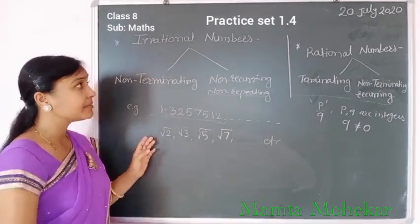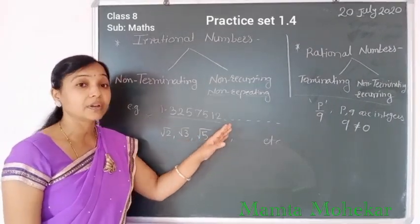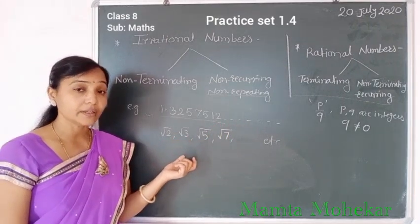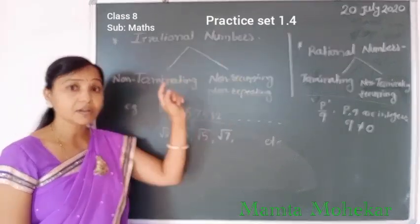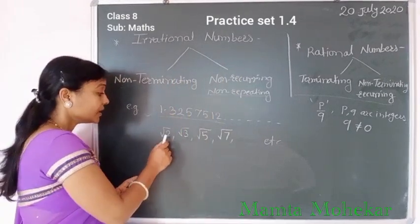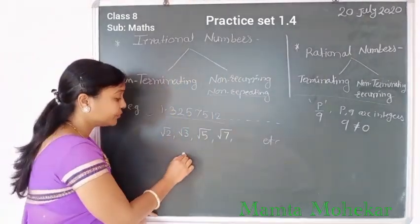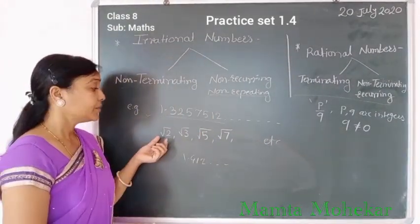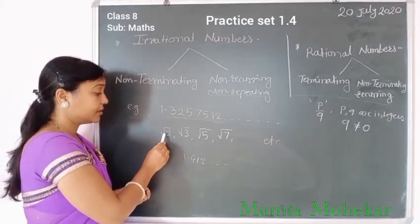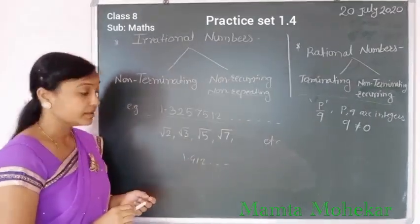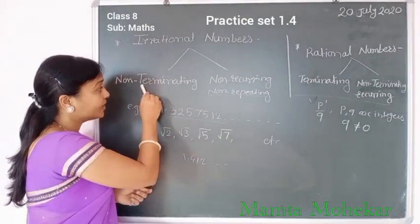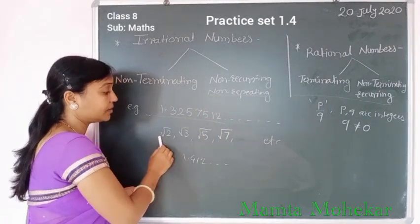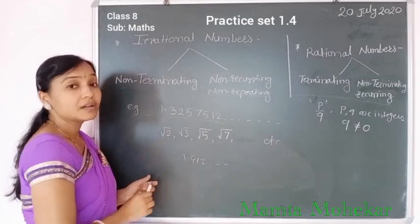The next type of irrational numbers are root 2, root 3, root 5, root 7, and so on — meaning a number which is not a perfect square of an integer is called an irrational number. The value of root 2 is approximately 1.412 and so on. We will see this in the next standard, but for now, root 2 is called an irrational number because its value is non-terminating and non-recurring. So all non-perfect squares are called irrational numbers.